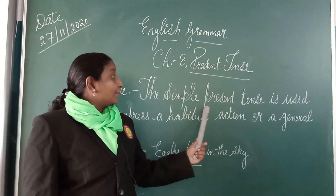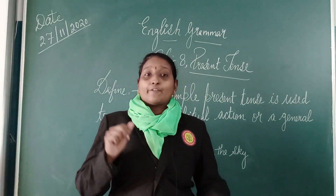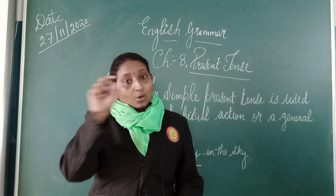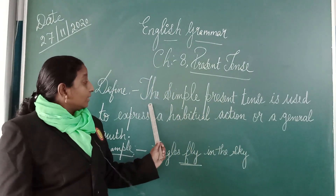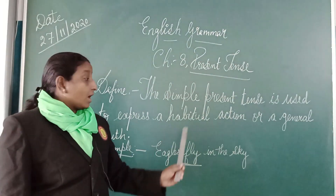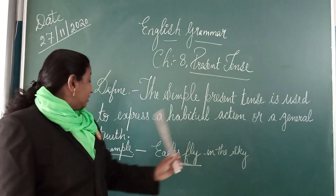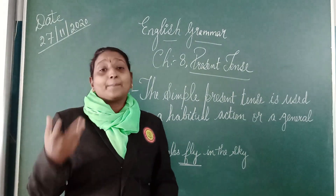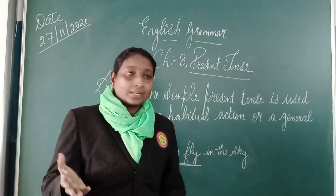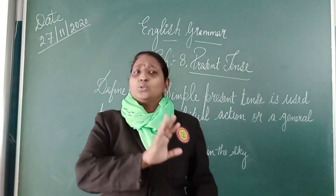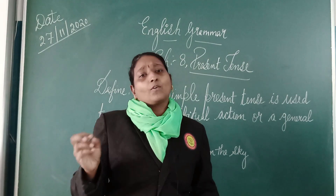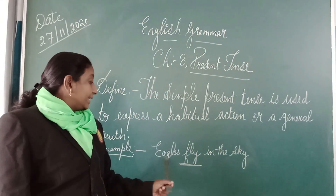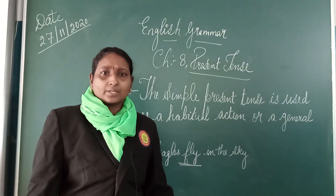The first one is simple present tense. So what is simple present tense? Please open up your page number 35 of your English grammar. The simple present tense is used to express a habitual action or a general truth. The action that is a habitual thing or a general truth. The example on my board is: the eagles fly in the sky. It is a habitual truth. It is a general thing.